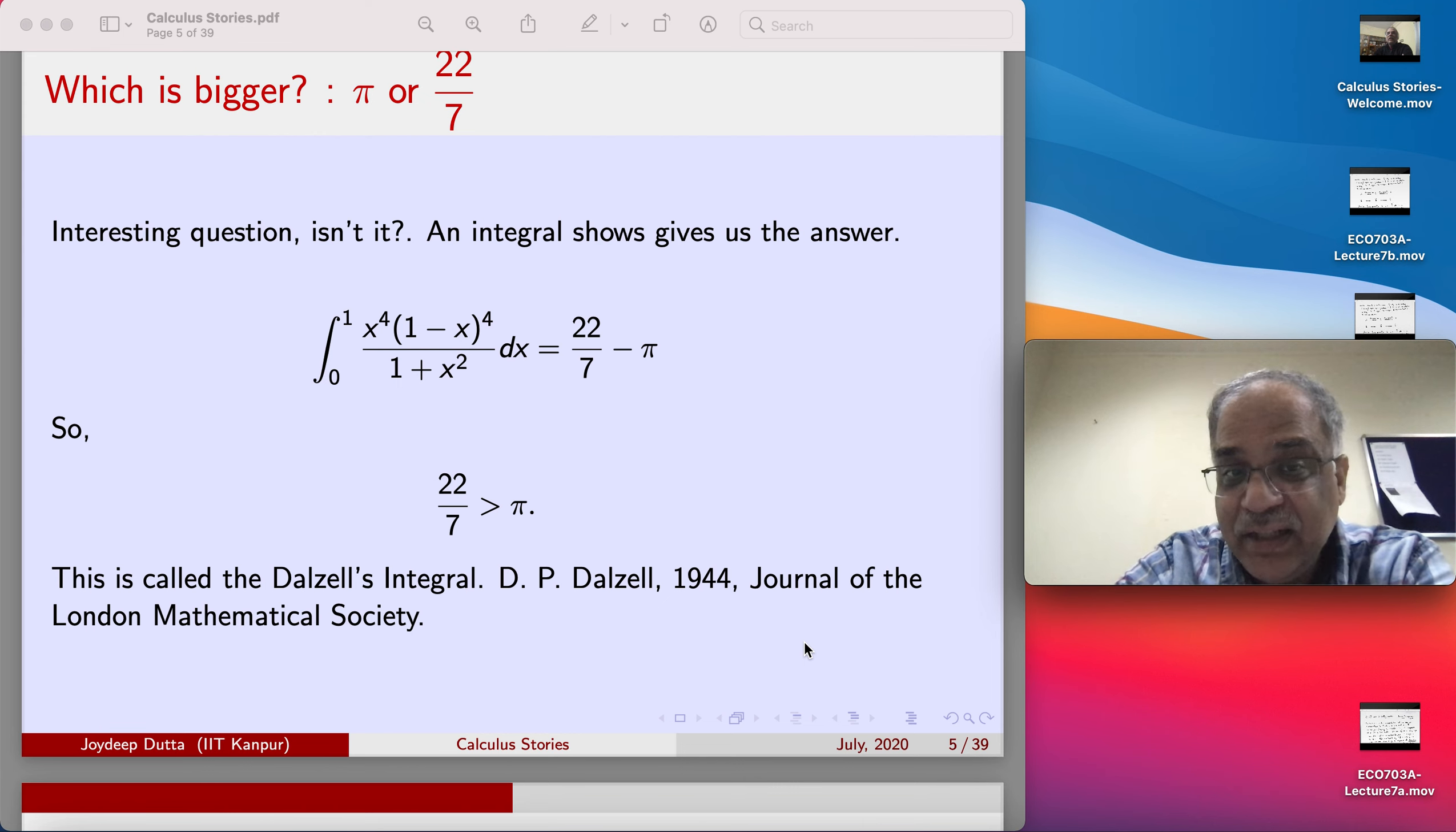This is called Dalzell's integral, which was published in 1944 in the Journal of the London Mathematical Society. But poor Dalzell is not so well known in the mathematical circle, but he did a very great thing actually. It is really fun, and I came to know its detail from a book of Ian Stewart and then from a book which I will recommend to all of you just for you to have fun: Inside Interesting Integrals by Paul J. Nahin.